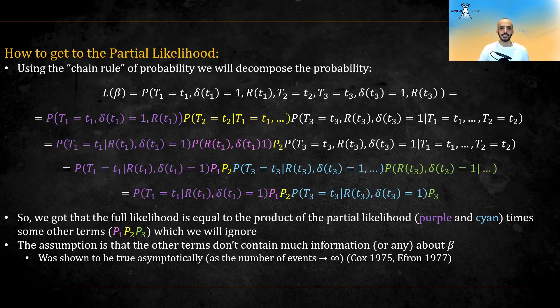We will now decompose t3 in the same manner. Notice that for the probability of t3, the random variable, equal t3, the value, and delta 3 equal 1, we do not care about delta 2 or delta 1. And given the risk set at t3, we don't care for the previous risk set. Note that the risk set at t3 does depend on the previous risk set.